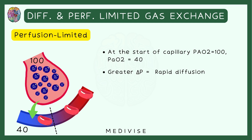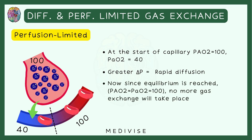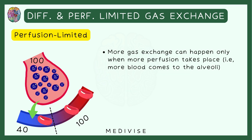This diffusion keeps on happening until the partial pressure of oxygen in the capillary also comes to 100. When this happens, the partial pressure gradient will no longer be there, equilibrium is reached, and there will be no more gas exchange. More gas exchange can only happen when more perfusion takes place — when more blood comes towards the alveolus. The new blood that comes will have a partial pressure of oxygen of only 40, so the gradient is restored and diffusion happens again. This is why we call this perfusion limited gas exchange.